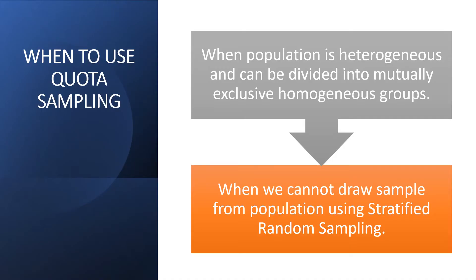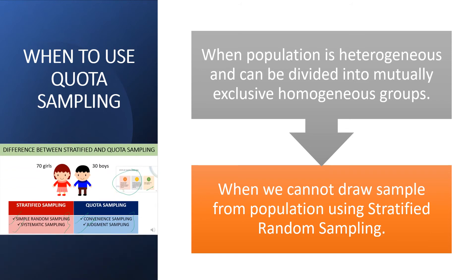When do we use quota sampling? We use it when the population is heterogeneous and can be divided into mutually exclusive homogeneous groups, as we did with girls and boys. We also use it when we cannot draw a sample using stratified random sampling. Researchers should prefer probability sampling — simple random or systematic random — in the third step if possible. If not possible, then the researcher uses convenience or judgment sampling, making it quota sampling.